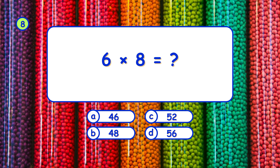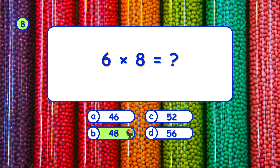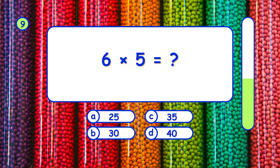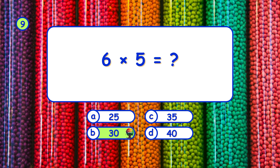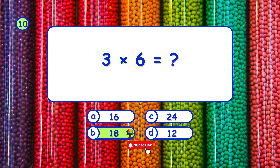What is 6 times 8? It's B, 48. What is 6 times 5? It's B, 30.